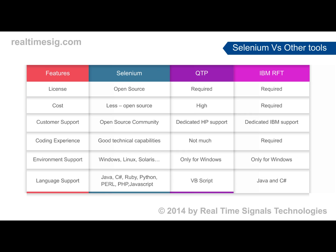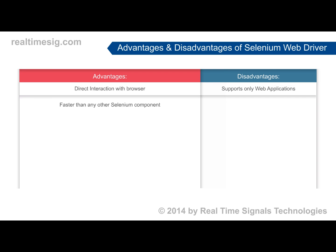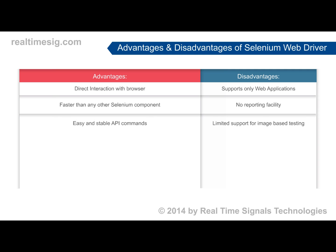Comparing the environmental support with the other tools, Selenium provides better support for Windows, Linux, and Solaris. The language support of Selenium is also better when compared to the other tools. The advantages of Selenium are that it provides direct interaction with the browser, which may be anything like Chrome, Firefox, IE, or Safari.